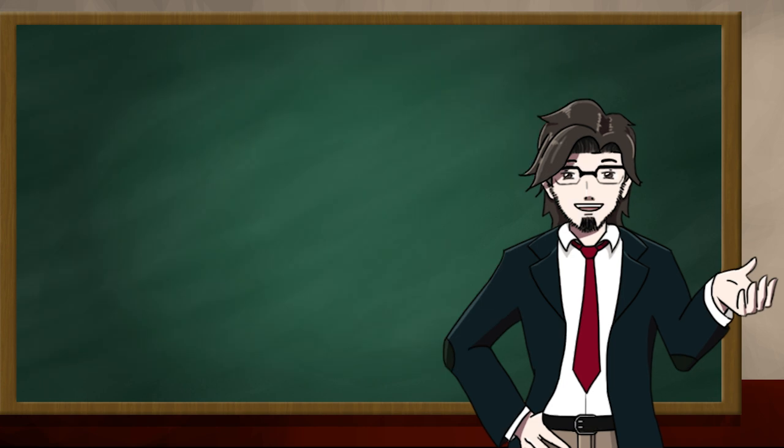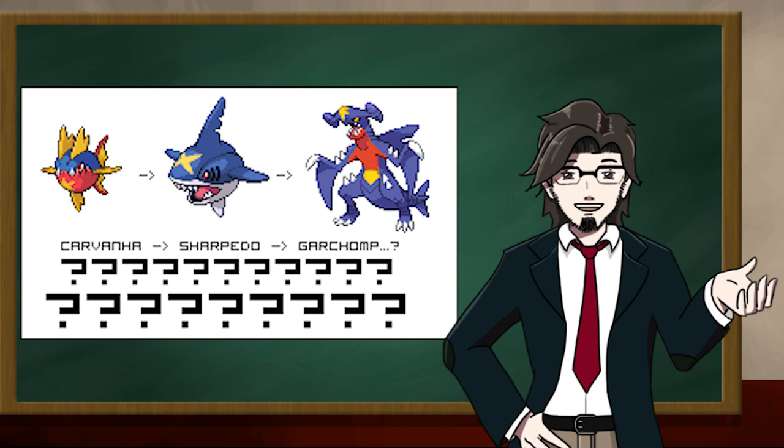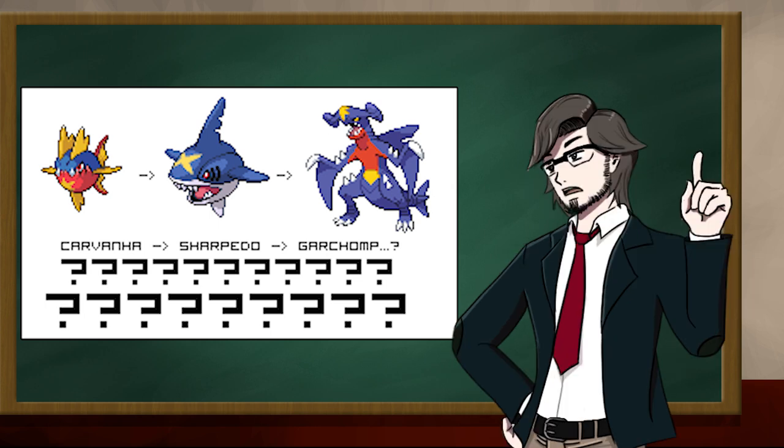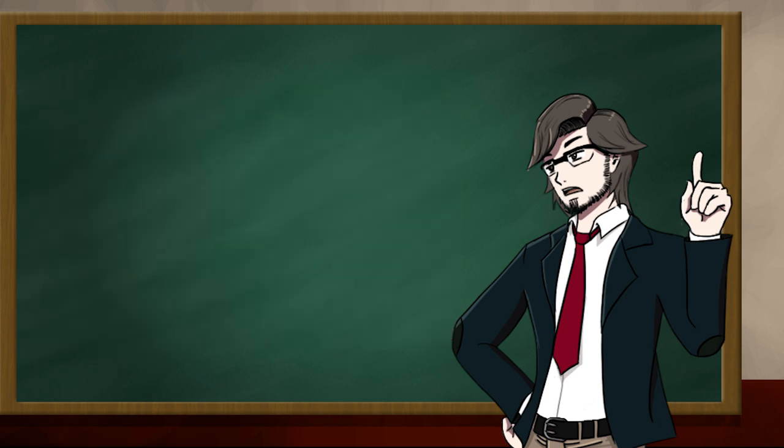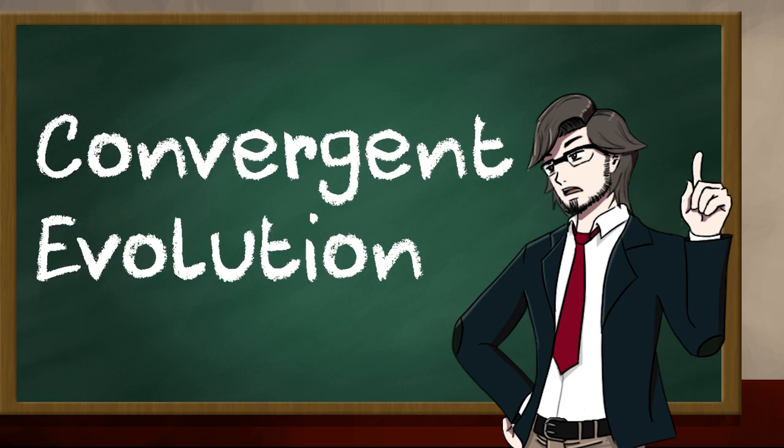Now, with the description that I just gave, it's easy to see why there are a lot of theories which say that Garchomp is a direct descendant of Sharpedo. However, this is completely incorrect. Just because two animals share similarities in the way they look does not mean that they are closely related through evolution, although this is a form of evolution known as convergent evolution.